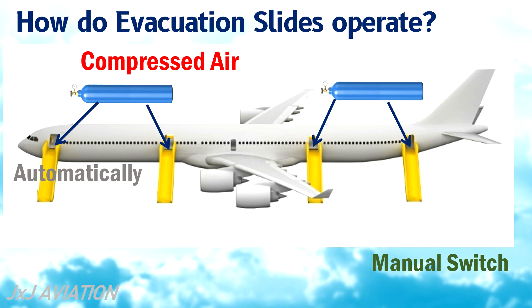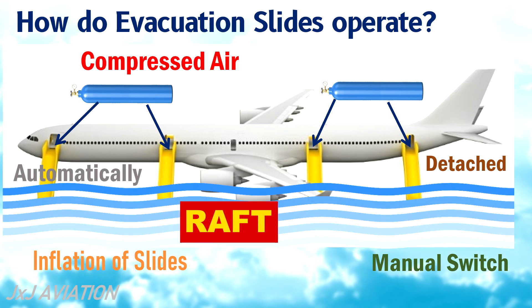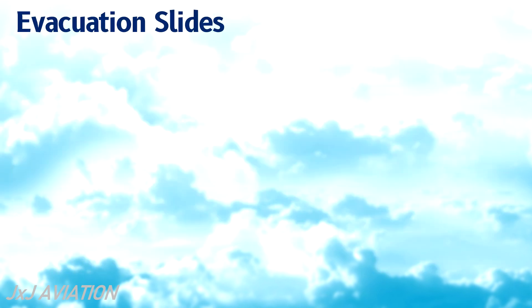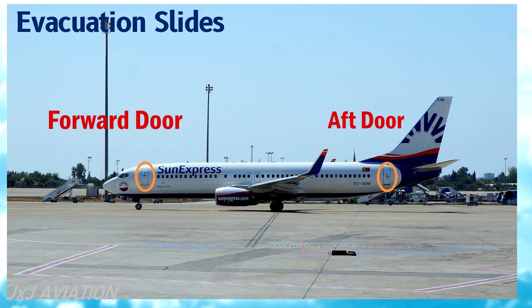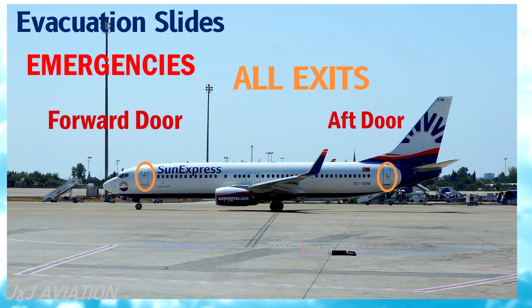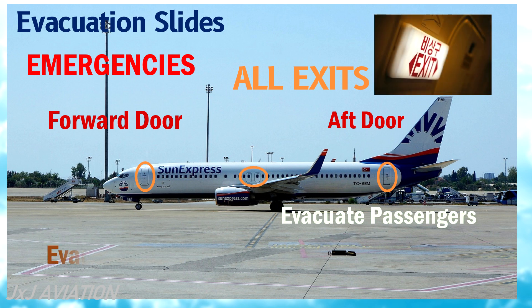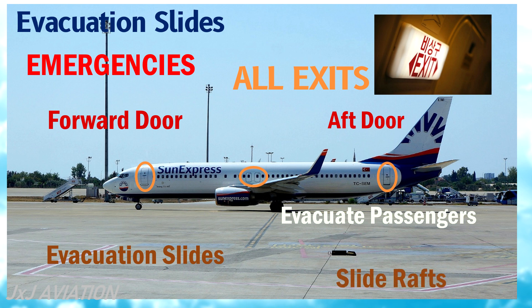On some aircraft, the evacuation slide can be detached after full inflation — this slide will then act as a raft in case of an emergency landing on water. Normally, only the forward and the aft doors are used for the movement of passengers, but during emergencies, all the exits should be used to evacuate passengers as fast as possible. So all the exits should have evacuation slides or slide rafts installed in the door structure.